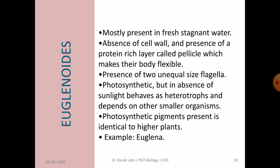The next group of Protista is euglenoids, which are mostly present in fresh stagnant water. Members of euglenoids have no cell wall; instead, there is a protein-rich layer called pellicle, which makes their body flexible. They also have two unequal-sized flagella and are photosynthetic, having photosynthetic pigments. But in the absence of sunlight, they behave as heterotrophs and depend on other smaller organisms for food.